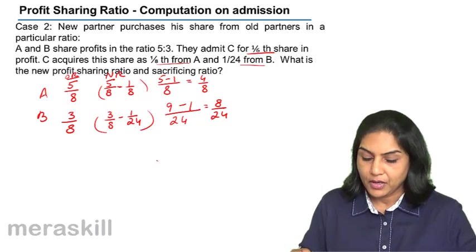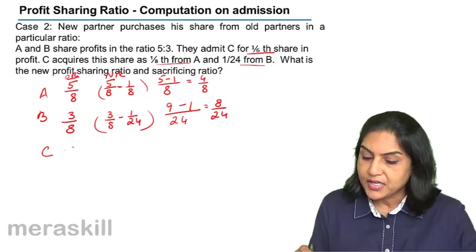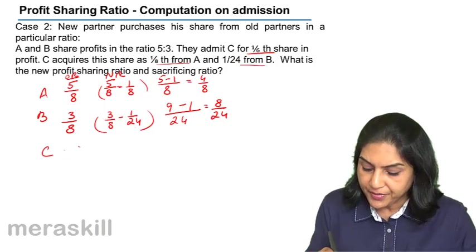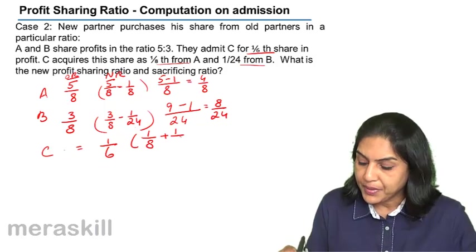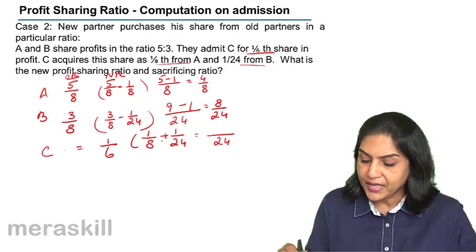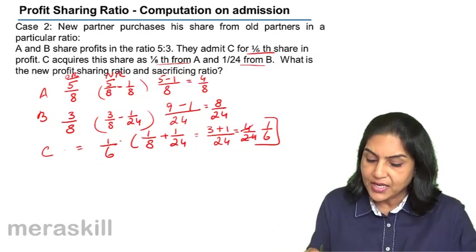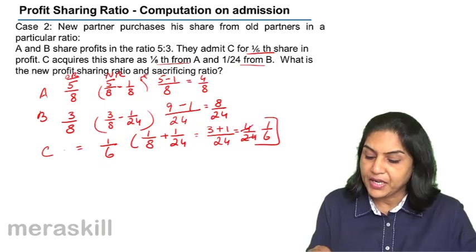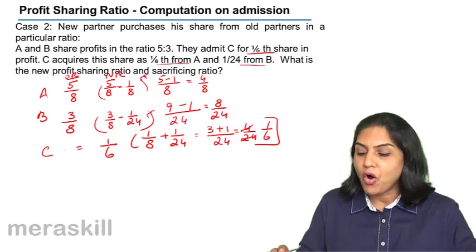What is C's ratio? C comes in for 1 sixth share, which is 1 by 8 plus 1 by 24. The LCM is 24, so 3 by 24 plus 1 by 24 equals 4 by 24 or 1 by 6. So C gains 1 sixth, A loses 1 eighth, and B loses 1 by 24.